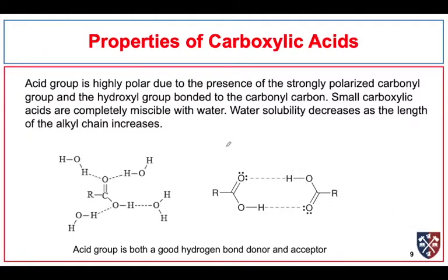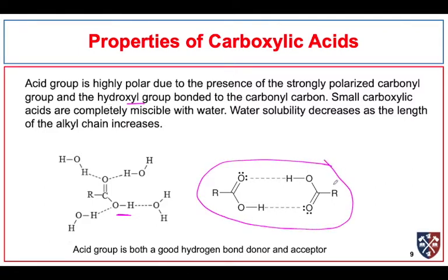The acid group is really quite polar, due to the presence of the strongly polarized carbonyl group and the hydroxyl group bonded to the carbonyl carbon. Small carboxylic acids are completely miscible with water, though this begins to decrease as the chain length increases. Carboxylic acids are both hydrogen bond acceptors and hydrogen bond donors. In organic solutions, dimers can form — and in fact these dimers are so strong that they can exist in the gas phase. Acetic acid can have a gas phase component which is the dimer, giving it rather high boiling points.